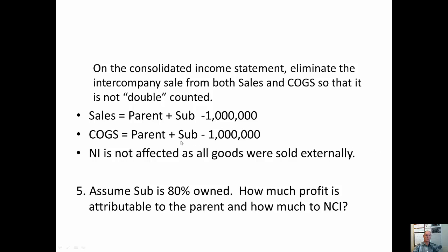Your income statement is going to be: sales are parent plus sub minus a million, and cost of goods sold is parent plus sub minus a million. We have deducted a million from our revenue and deducted a million from our expenses — therefore there is no effect on net income, but we have shrunk our income statement back to where it should have been if we had only sold to external parties. If we didn't do this, sales would be $3.5 million — the sub's million-dollar sale plus the parent's $2.5 million sale to external parties.